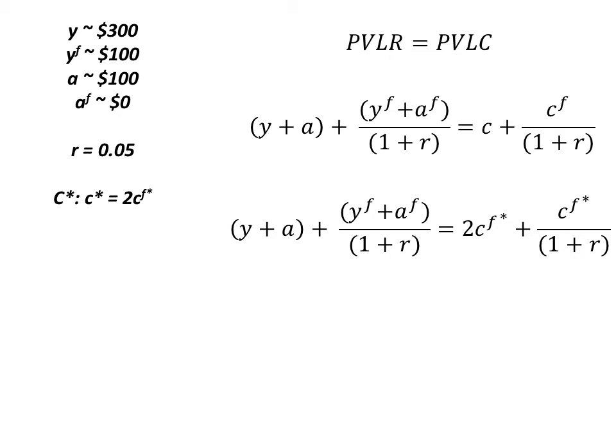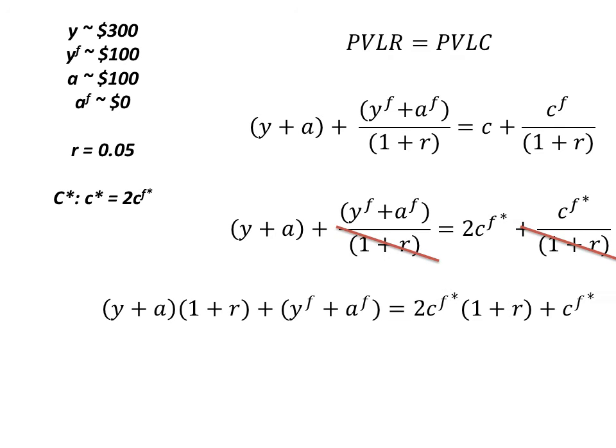Again we are going to work with the whole equation and get rid of the denominator by multiplying everything by (1+r). If we do that we're going to get Y plus A times (1+r) plus YF plus AF is going to equal 2·CF times (1+r) plus CF.